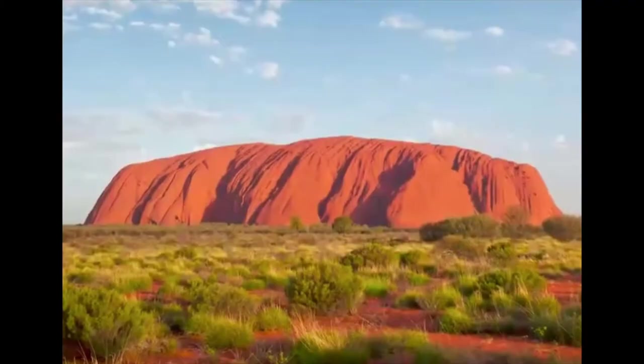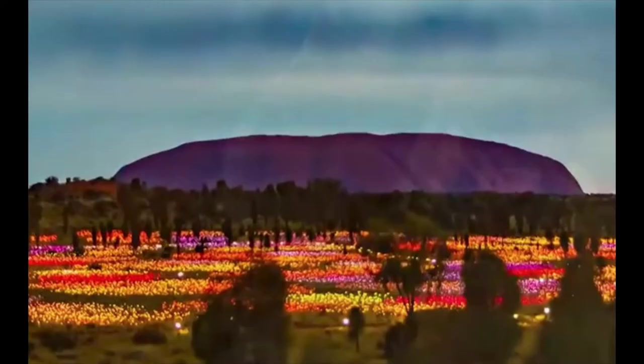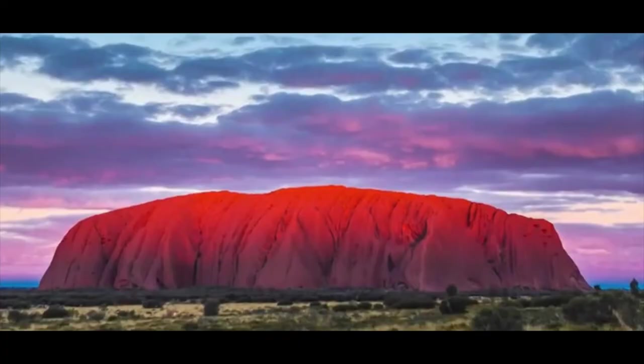Ayers Rock is a large flat mountain they call Uluru, and it shows different colors at different times like reds and purples and browns and oranges.